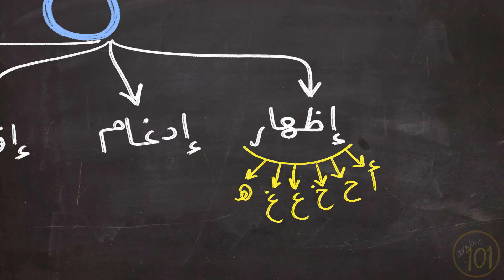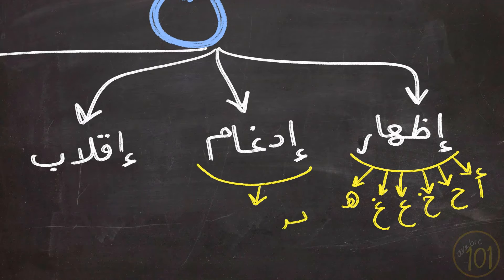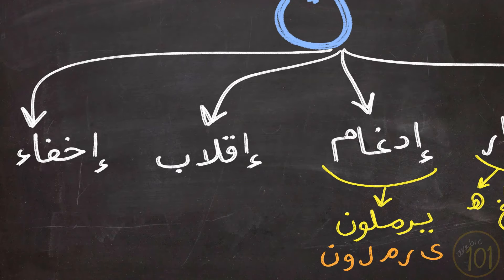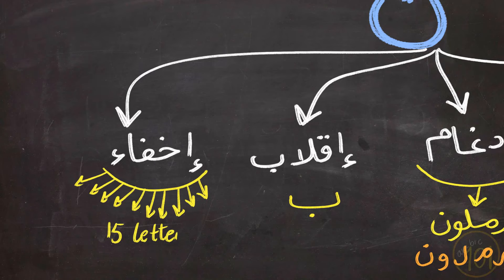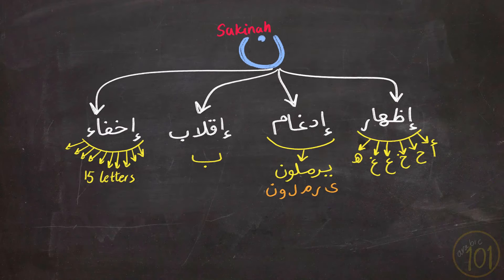...Ayn (عين), Ghayn (غين), and Ha (هاء). With Idgham, you fuse the Noon Sakinah with or without Ghunna after the letters of يرملون — also six letters. With Iqlab, you turn the Noon into a Meem without pressing your lips when followed by Ba (بأ). And with Ikhfa, there are 15 letters that cause Ikhfa to happen. So how can you find your way through all these lists while reciting the Qur'an?